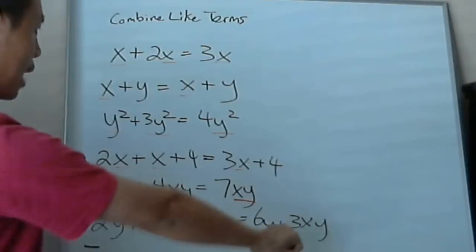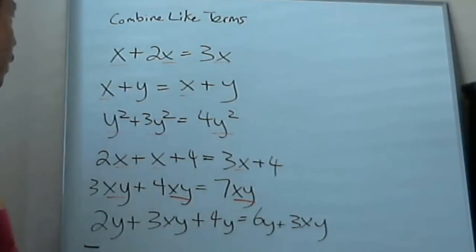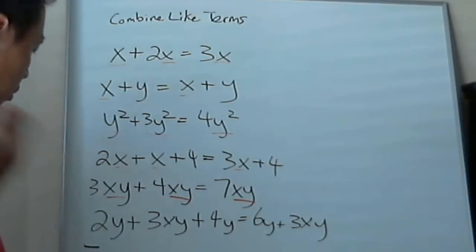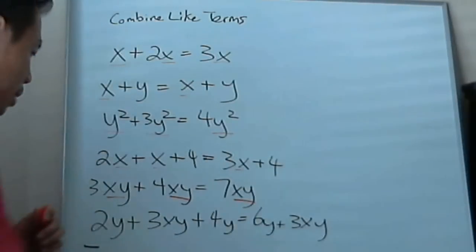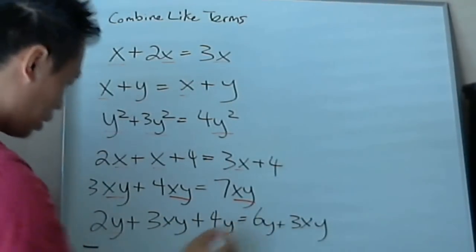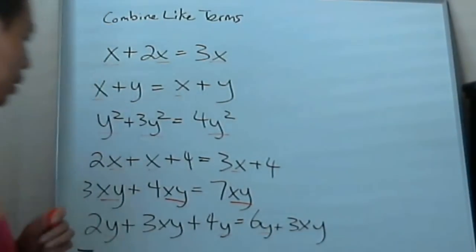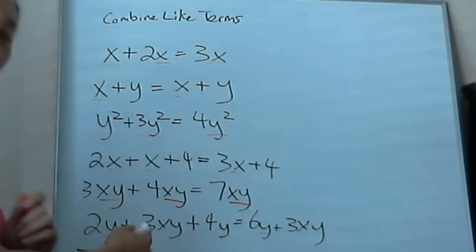So we'll go on to the final example of this first lesson of combined like terms. It's basically 2y plus 3xy plus 4y. So what can you do there? Well, you can combine the y's, right? See? 2y plus 4y and it will equal to 6y.